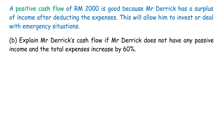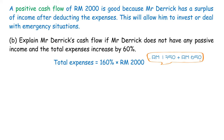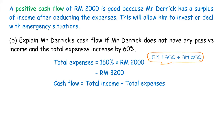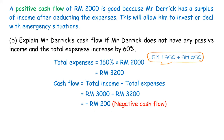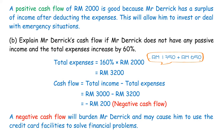If Mr. Derrick does not have any passive income and total expenses increase by 60%: Total expenses equal 160% times RM2,000 equals RM3,200. Cash flow equals RM3,000 minus RM3,200 equals negative RM200 — a negative cash flow. This will burden Mr. Derrick and may cause him to use credit card facilities to solve financial problems.